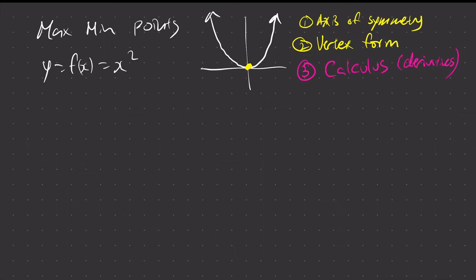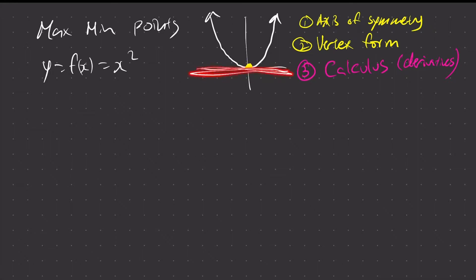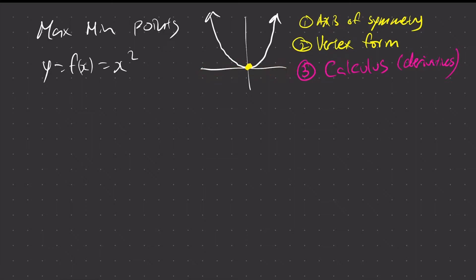If we're going to have a minimum point here, we know that the slope must be zero. Because if I were to draw one tangent line, one straight line that touches this point once, this line will have zero slope. If we were to draw a line here, this is negative slope. If we draw a line here, this is a positive slope.